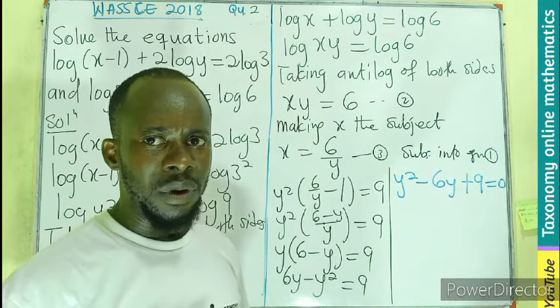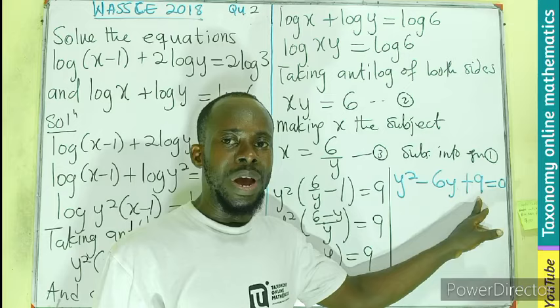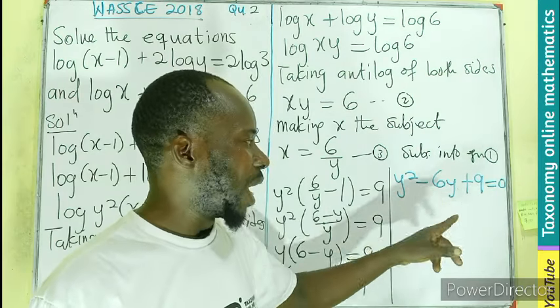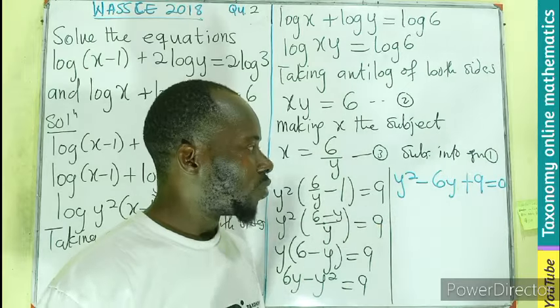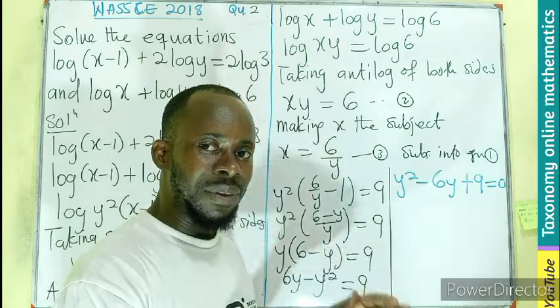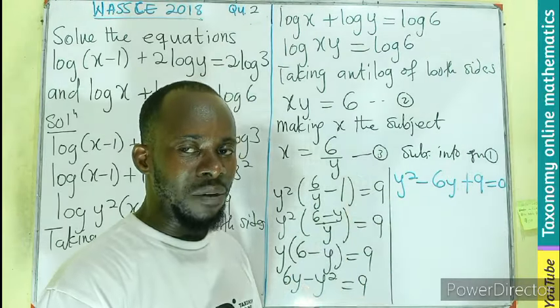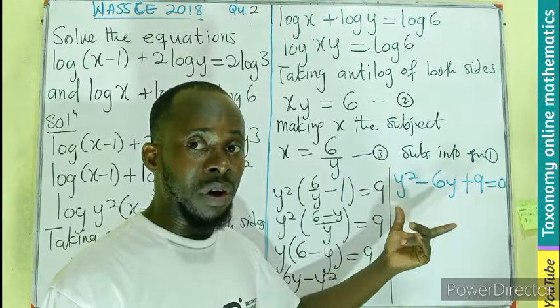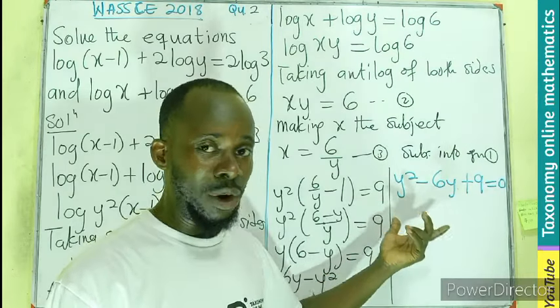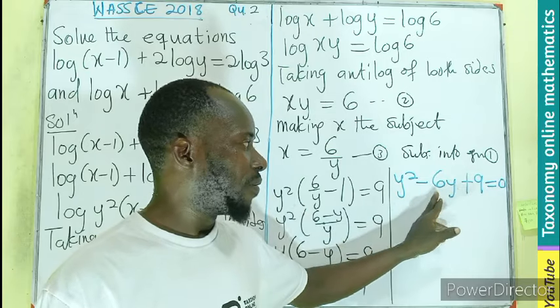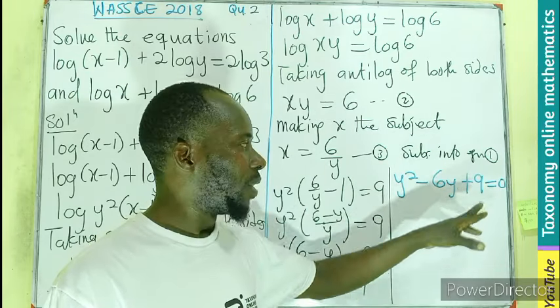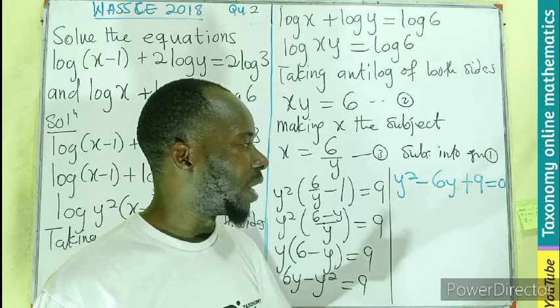So what do we look for? We look for the factors of 9. When you multiply, you get 9. When you add, you get negative 6. Meaning those two factors must all be negative. So negative 3 times negative 3 gives us the value of negative 6. This alone is already a perfect square trinomial. Because if you have the half, the square of the middle term gives you the constant. So we can call it a perfect square.